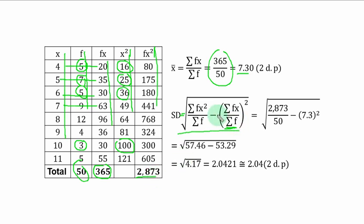So you replace fx squared with 2873. Then f is 50. Already from the first part, you know summation fx over summation f as the mean to be 7.3. You simply square it. You divide this place. You have 57.46.